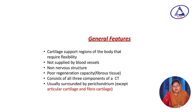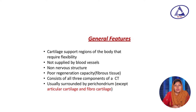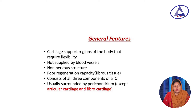Cartilage consists of all three components of connective tissue. The basic components are cell, fiber, and ground substance, so cartilage has its own cells, fibers, and ground substance. The covering of cartilage is called perichondrium, but perichondrium is absent in two places: number one, articular cartilage; number two, fibrocartilage. This is important information to remember.